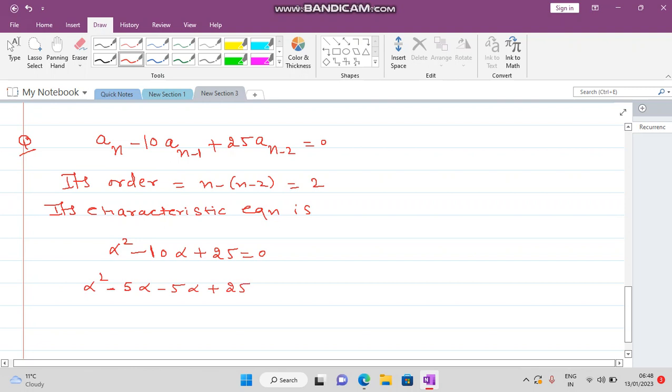Alpha squared minus 5 alpha minus 5 alpha plus 25 equals 0. Take alpha common from this: alpha(alpha - 5) - 5(alpha - 5) equals 0. It is (alpha - 5)(alpha - 5). So what are the values of alpha? 5 and 5. Therefore the solution is a_n = (c1 + c2*n) times 5 raised to the power n.